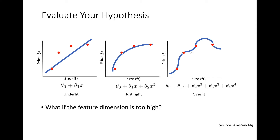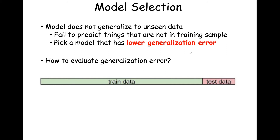We want to reduce overfitting and select a model descriptive enough to match the trends in the underlying ground truth target function, but not so specific that it also matches the noise. If the feature dimension is too high, this can get even worse. With model selection, we fail to predict things not in the training example if we don't generalize well. We want to pick a model with lower generalization error — but how do we evaluate out-of-sample performance on data points we have not seen?